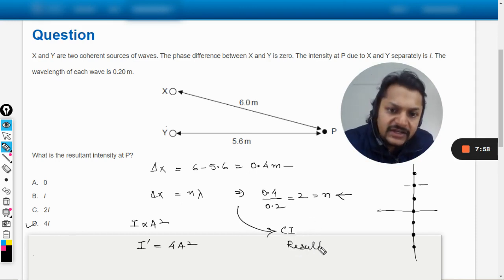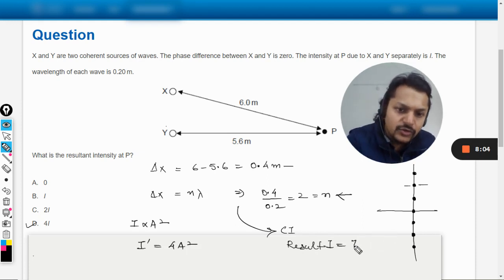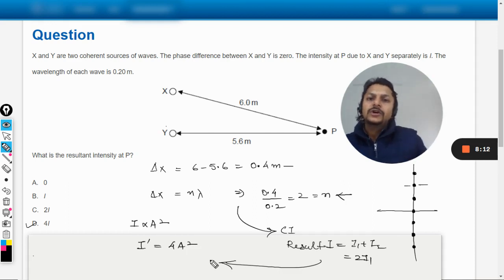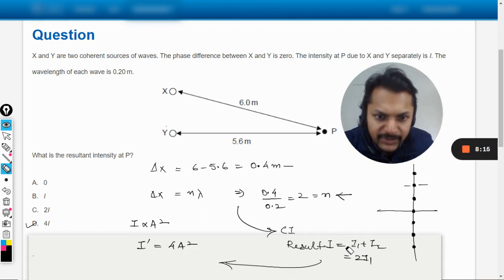From this we have jumped to the conclusion that it will be constructive interference, and in constructive interference the resulting amplitude is double, so hence the intensity is 4I. Not intensity, amplitude becomes double.